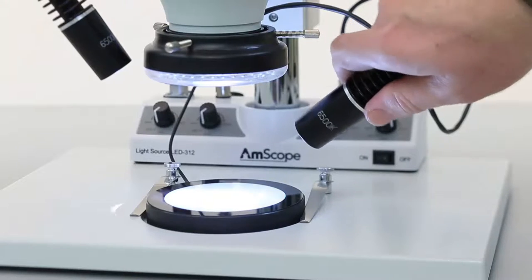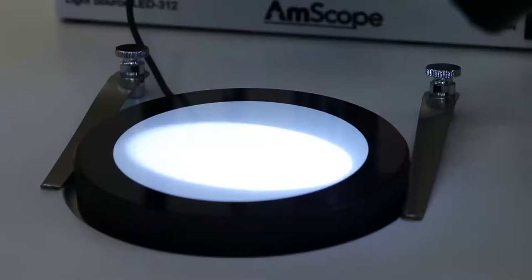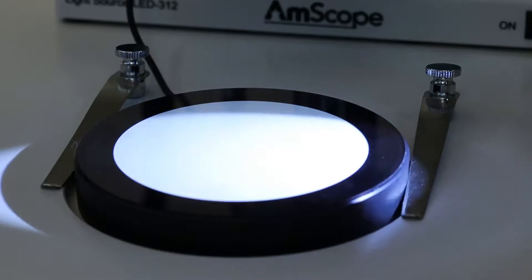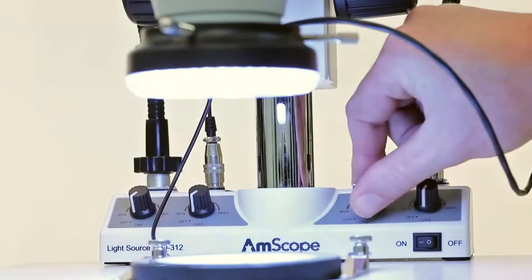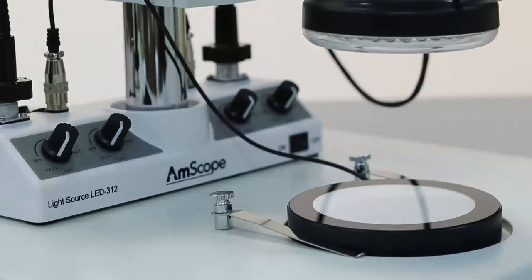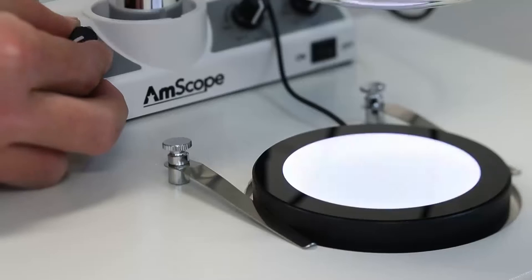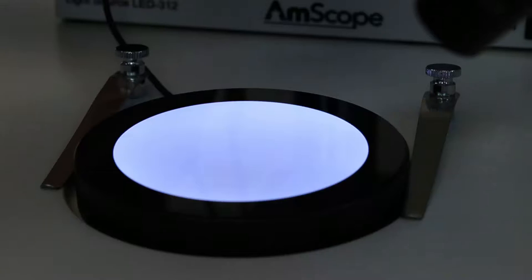The goosenecks provide a flexible source of directional lighting. The ring light provides an even light source. And the illuminator plate provides a transmitted light source for translucent objects, or for backlighting.